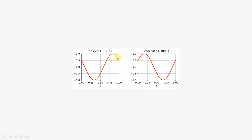By looking at the amplitude we can find the phase, or can we? Because cos of 300 degrees is also 0.5.